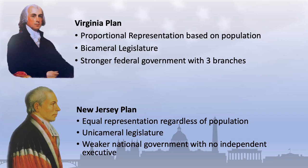However, the two plans both granted greater powers to the national legislature, including giving it the power to impose taxes and regulate interstate trade. In essence, while the Virginia Plan essentially abandoned the Articles of Confederation, the New Jersey Plan sought to retain the Articles while expanding the powers of Congress.